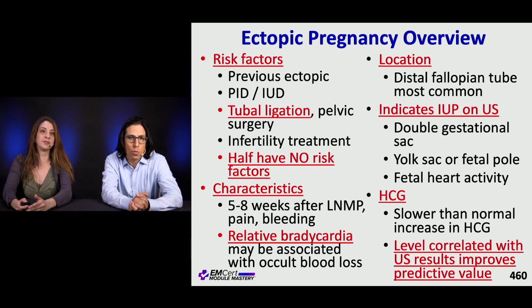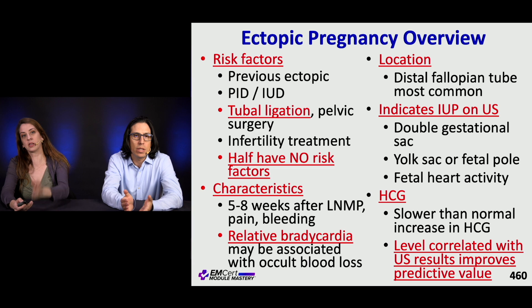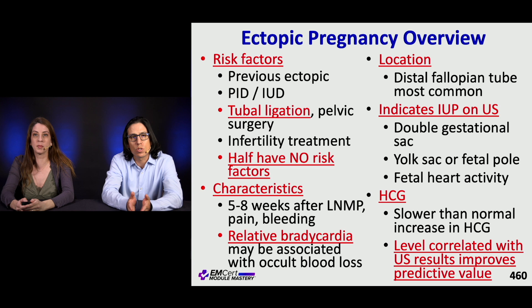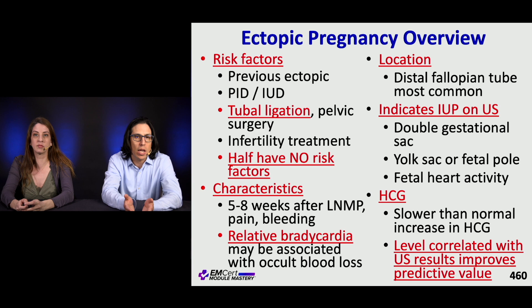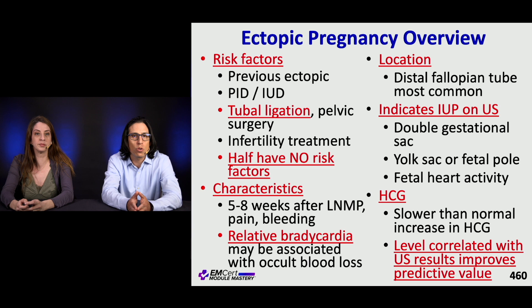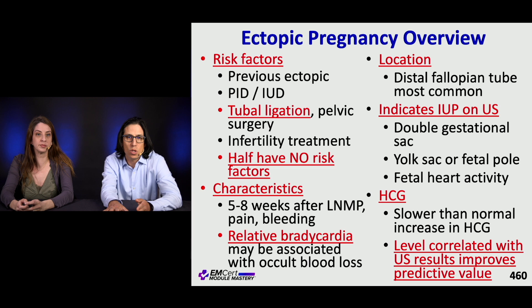Here's an overview of ectopic pregnancy. Risk factors include PID, previous ectopic, tubal ligation, and pelvic surgery — but half of these patients will have no risk factors. This typically occurs five to eight weeks after the last menstrual period with pain and sometimes bleeding. You may have relative bradycardia due to excessive vagal tone. The most common location is a distal fallopian tube ectopic. On ultrasound, a double gestational sac, yolk sac, fetal pole, or fetal heart activity confirms an IUP and generally excludes ectopic.